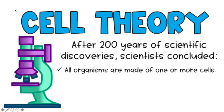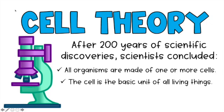Cell theory states that all organisms we know are made of one or more cells. Notice that it says one or more cells — there are single-celled organisms which we're going to talk about in this video. The next part of cell theory says that the cell is the basic unit of all living things, meaning that cells are the thing that builds every organism on planet Earth that is alive.